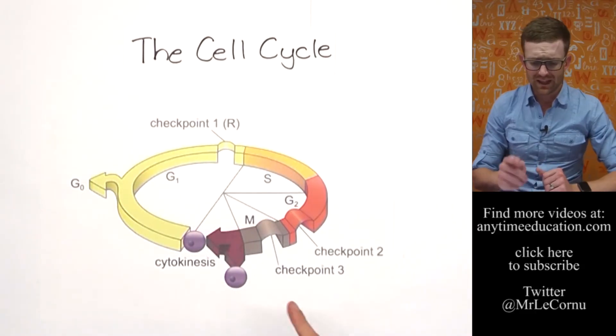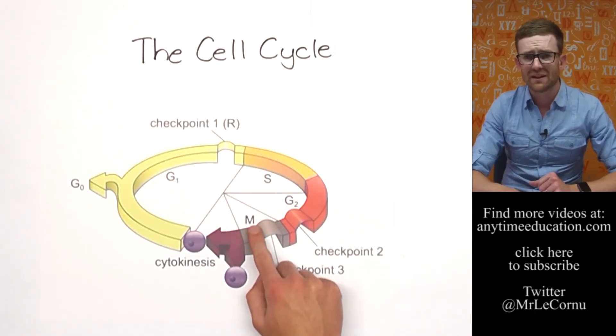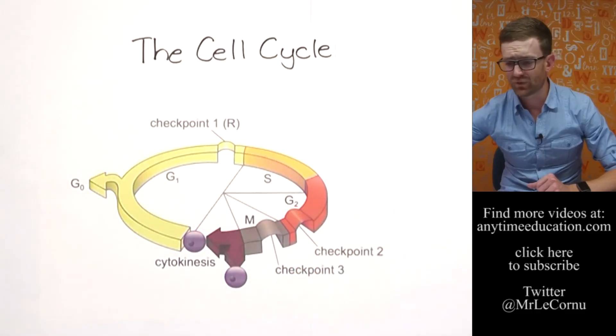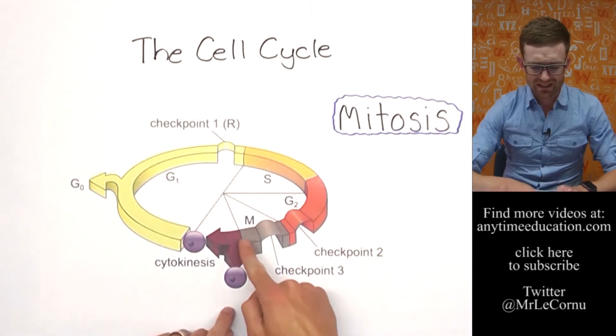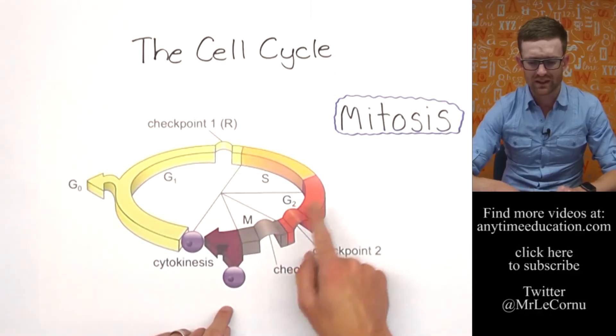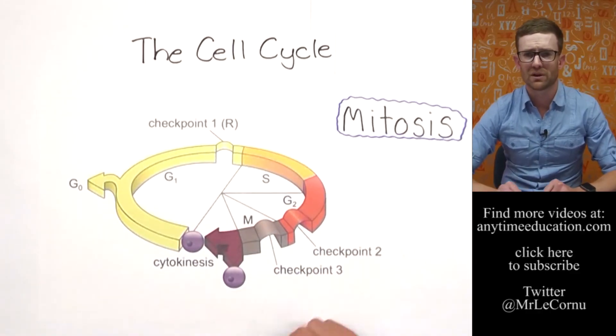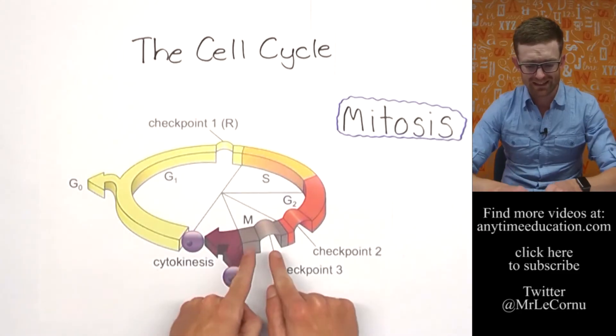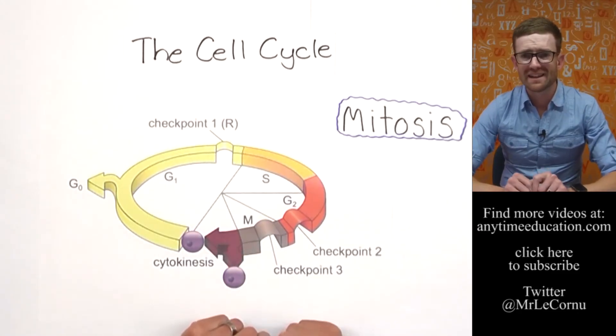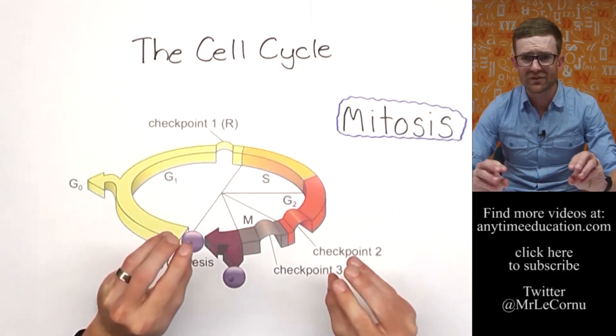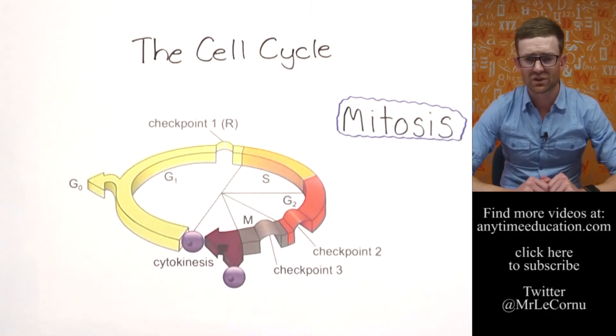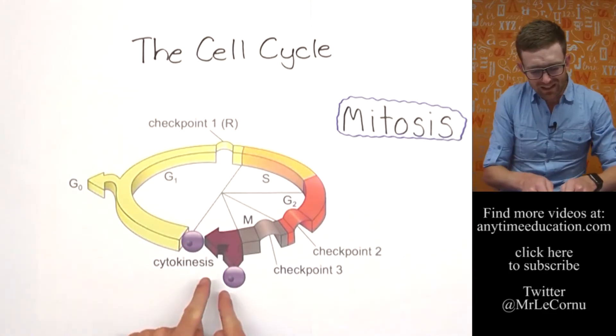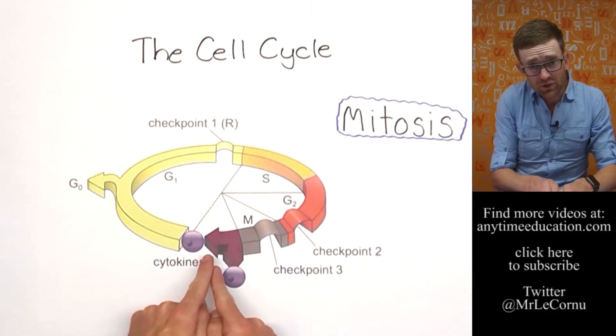Then we get to M phase. M stands for mitosis. If you want to find out the specifics of what happens here, check out the video on mitosis. But basically it's the part where the DNA is evenly divided so that the two new daughter cells get identical copies to the original parent.